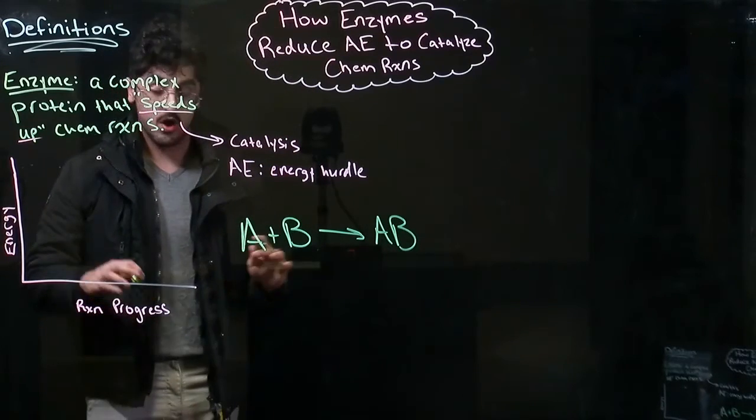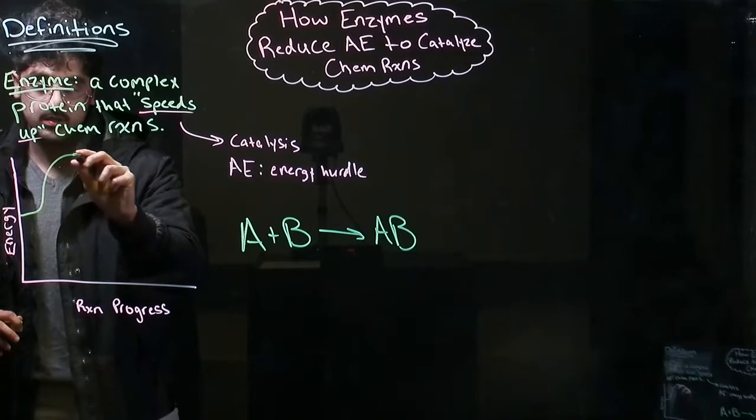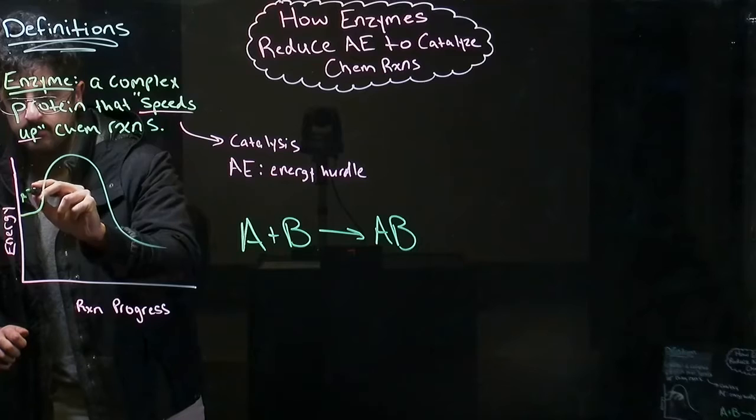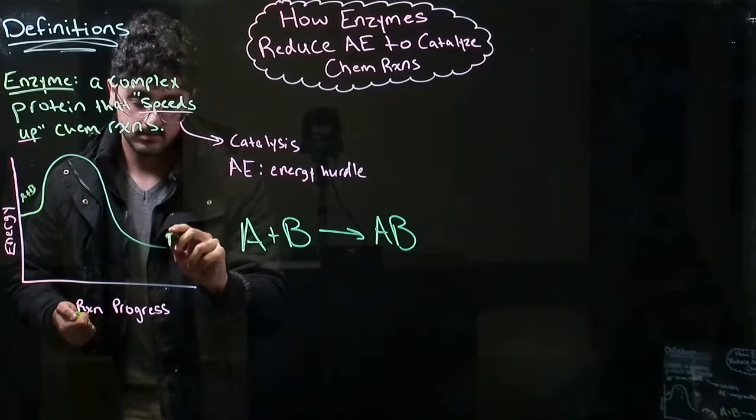So we're going to draw our first line without the enzyme. So it's going to look something like this. So here's your reactants, A plus B. And then your products are going to be AB.